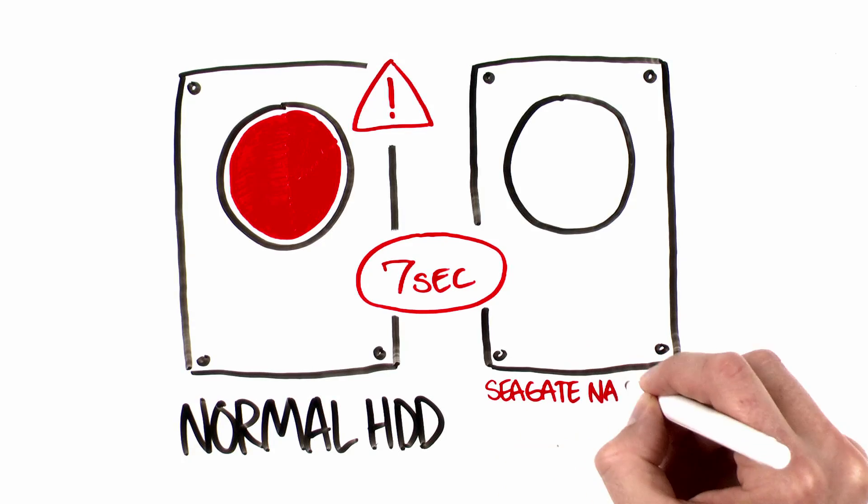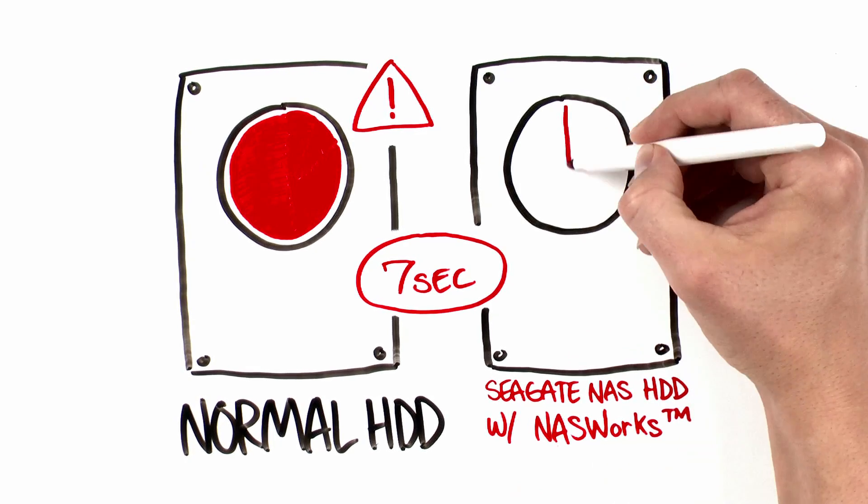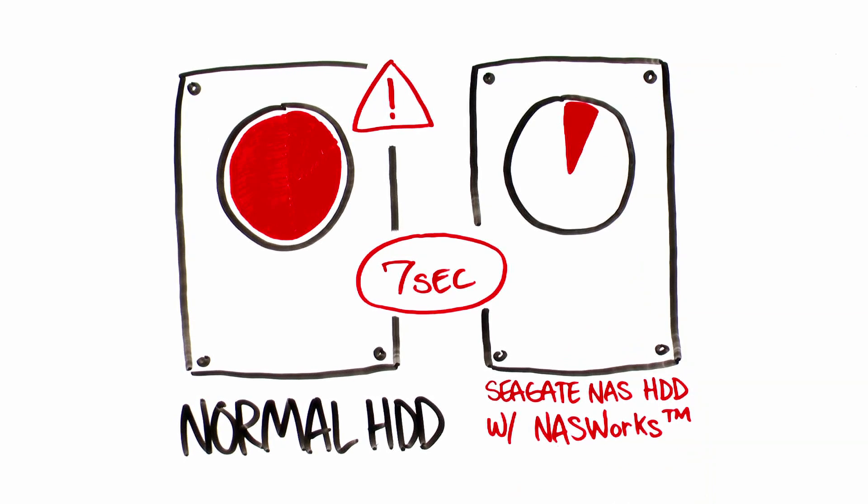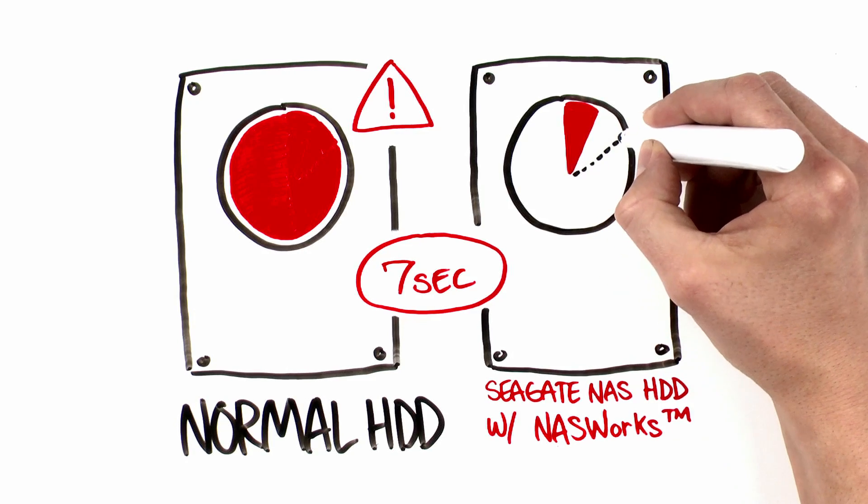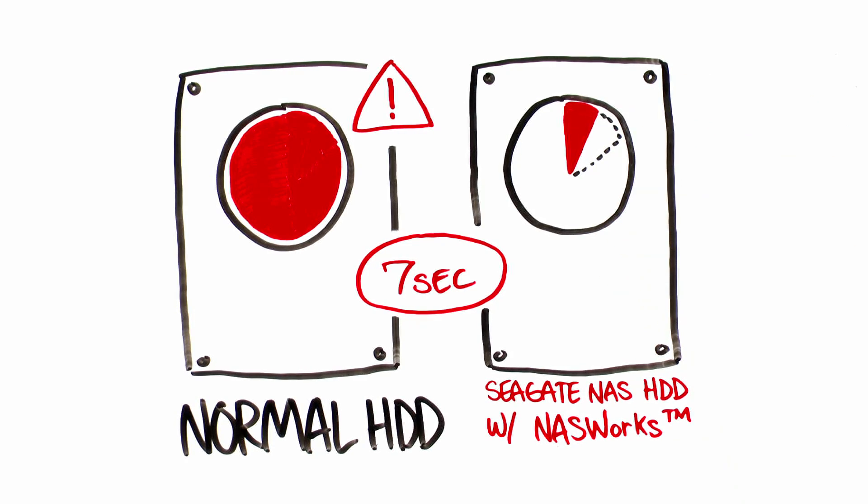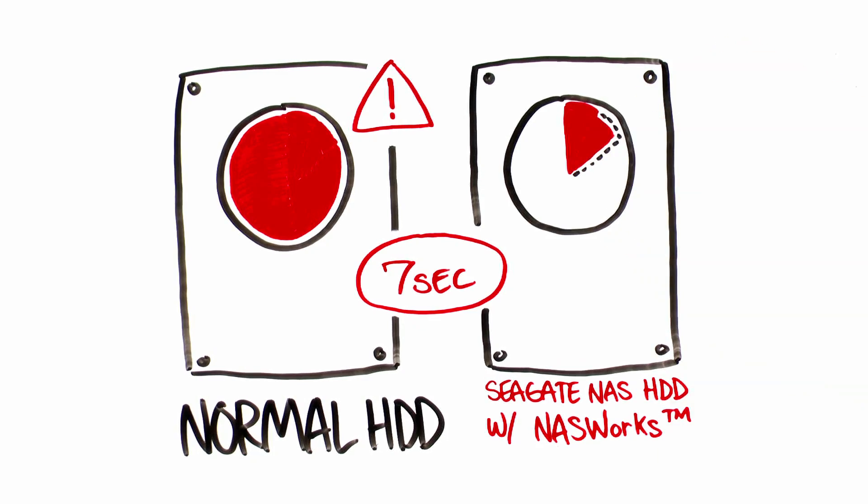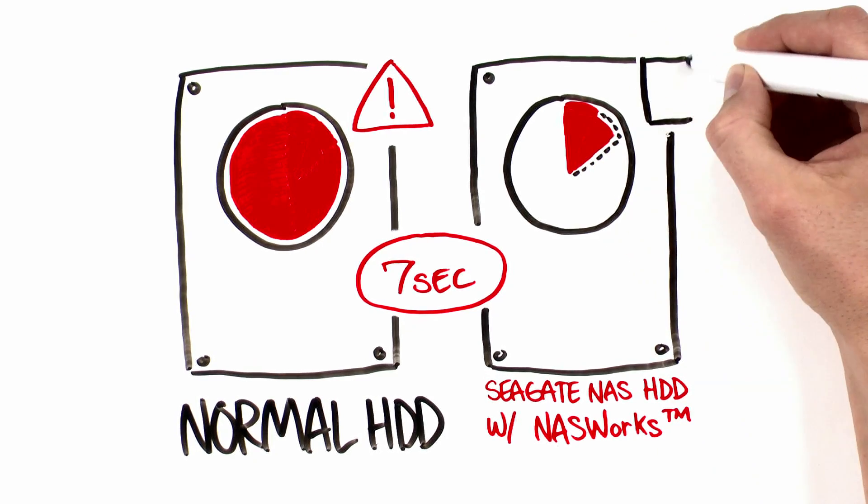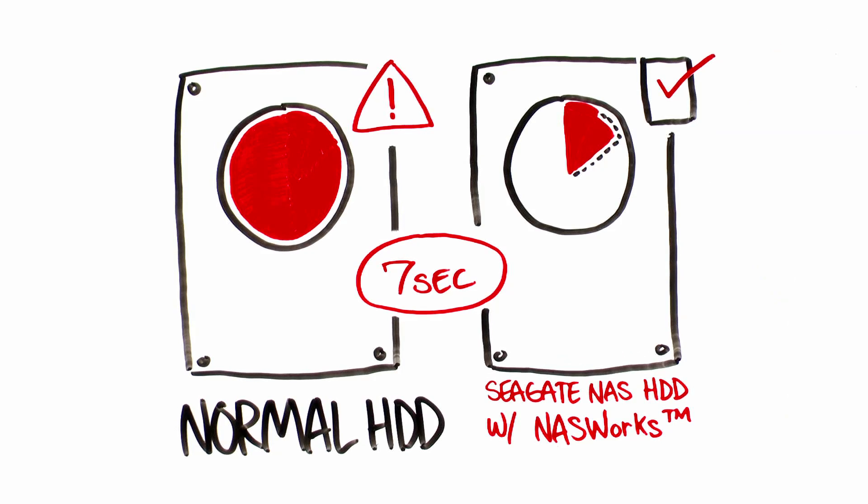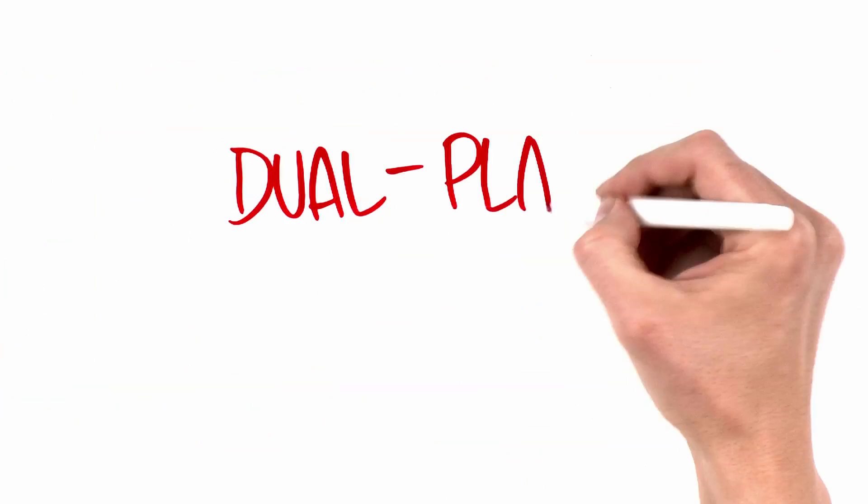the drive will stop trying to recover the data after 7 seconds, and instead notifies the RAID that it needs assistance rebuilding a specific piece of data. This saves time. The RAID can help correct that data from backups, and a full drive rebuild is avoided. In a multi-drive NAS system,